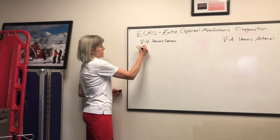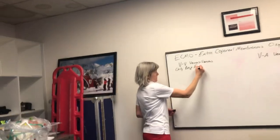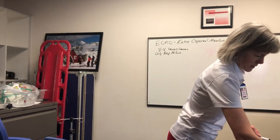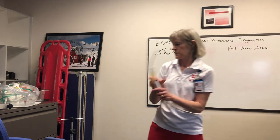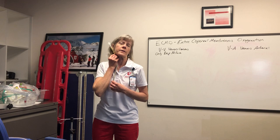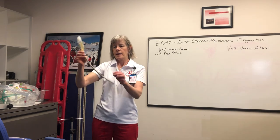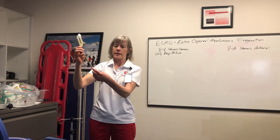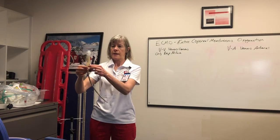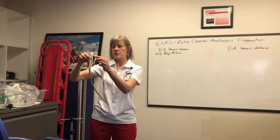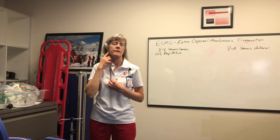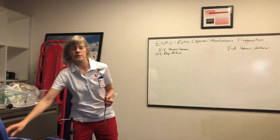VV ECMO is only for respiratory failure, and the reason for that is the cannula. The cannula is a big double-lumen cannula with a stylet and it can only go in the right IJ. It has holes here and here - it sits in the heart, takes blood out of the heart and IVC, out of the body, goes to the pump, to the oxygenator, and then back into this cannula through this hole. I'll pass the cannula around in a minute. The arm has to point forward because this hole sits at the tricuspid valve.